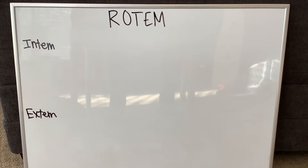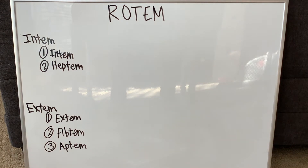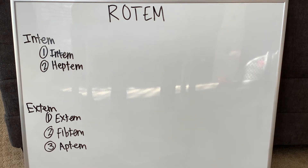The next topic is the two different assay families for ROTEM. There's the Intem family and the Extem family. The two in the Intem family are Intem and Heptem. The three in the Extem family are Extem, Fibtem, and Aptem. These are all different assays you can ask your anesthesiology assistant or techs to run on the ROTEM.